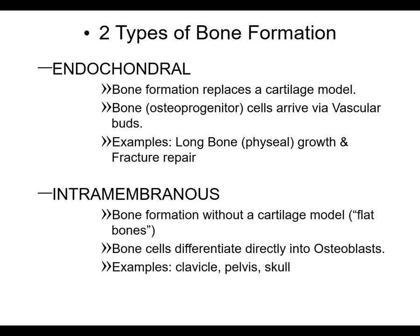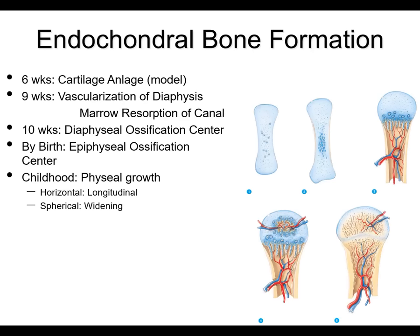Endochondral ossification is where bone formation replaces a cartilage model — meaning you form cartilage, and then it calcifies to form bone. Osteoprogenitor cells arrive via vascular buds, and a long bone like the femur would grow this way. Importantly, this is also the mechanism by which fracture repair takes place — fracture repair mimics this endochondral ossification model. Intramembranous ossification, on the other hand, is bone formation in the flat bones such as the clavicle, ribs, and pelvis, where you get bone formation without a cartilage model and the bone cells go right into osteoblasts.